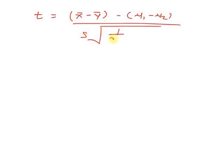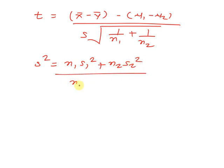And s² equals (n1 times s1² plus n2 times s2²) divided by (n1 plus n2 minus 2). So first we calculate the value of s².